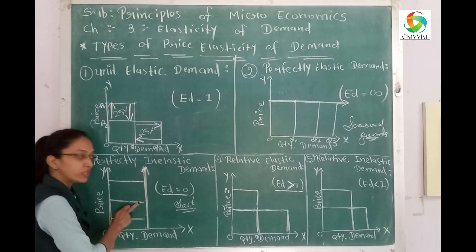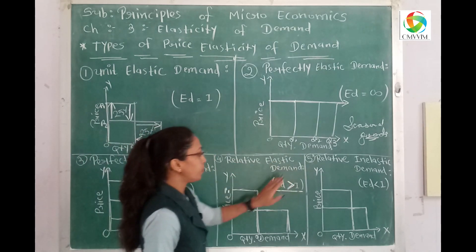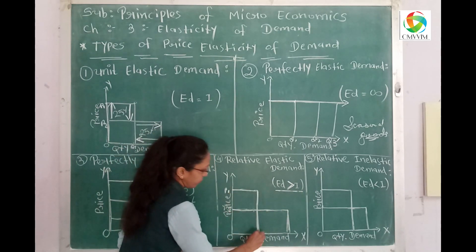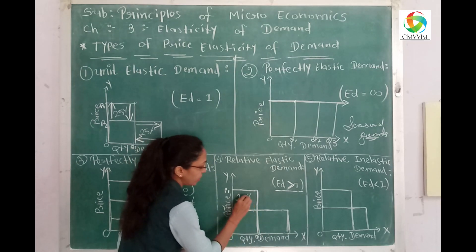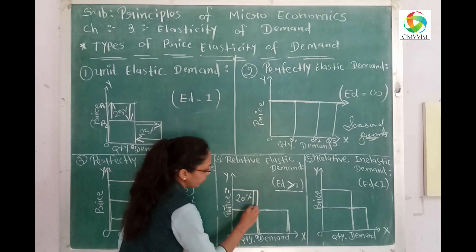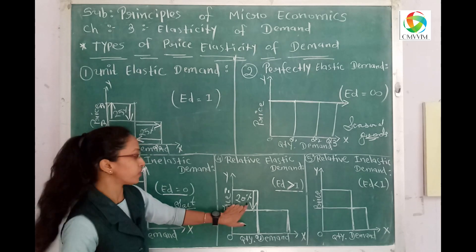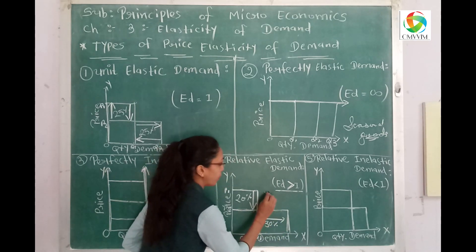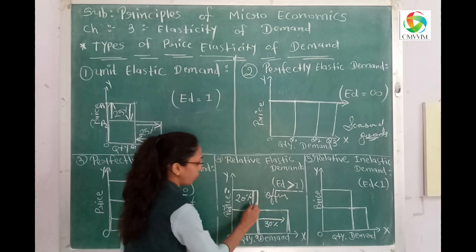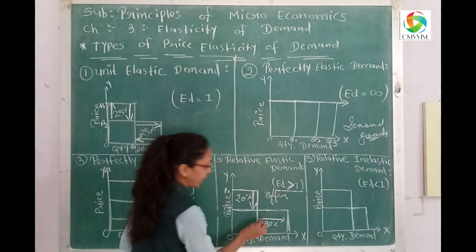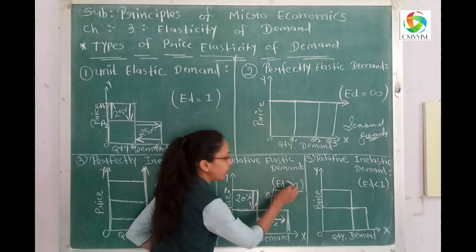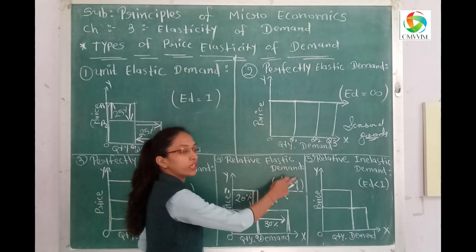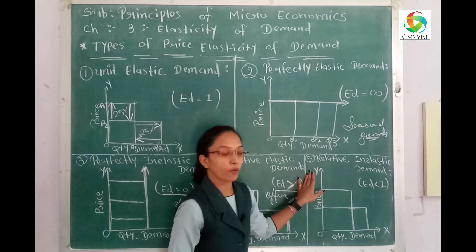Fourth: relative elastic demand, where elasticity of demand is greater than one. Here, if the price of a product decreases — say 20% off or a discount offer — the demand increases by a larger percentage, say 30%. The change in demand is greater than the change in price. This is called relative elasticity of demand, where demand is greater than one.